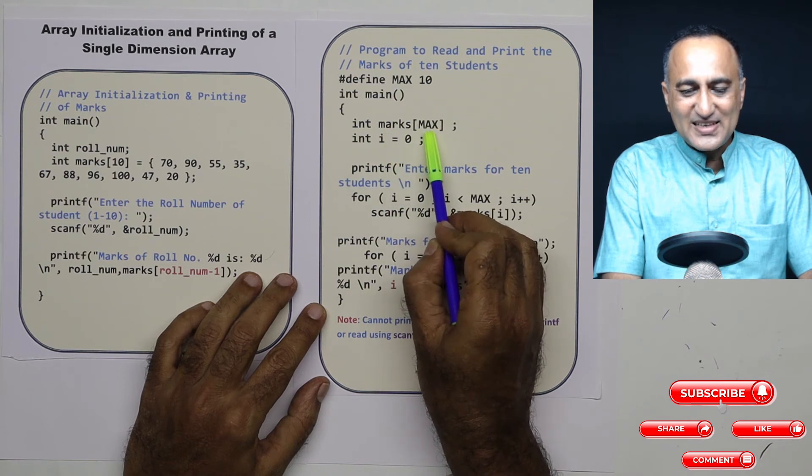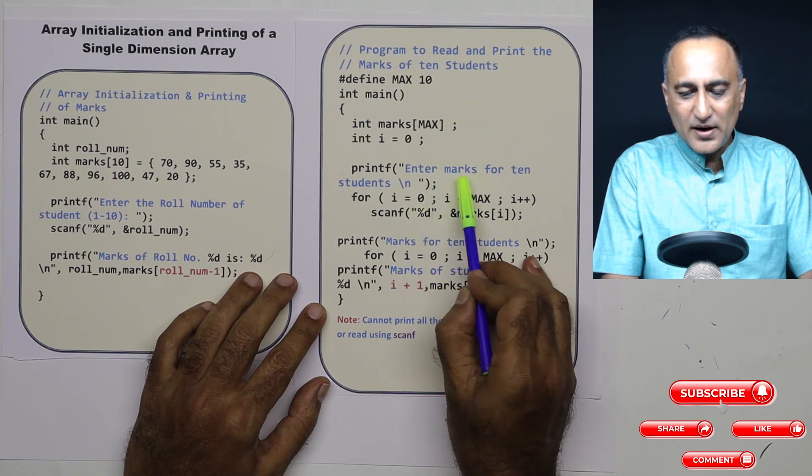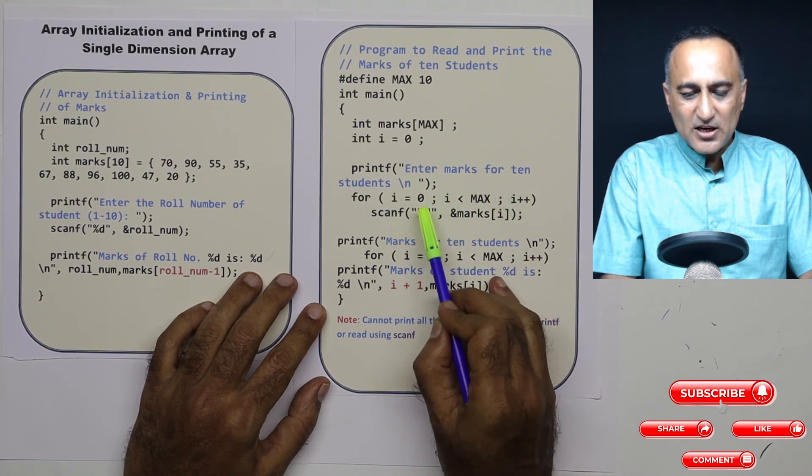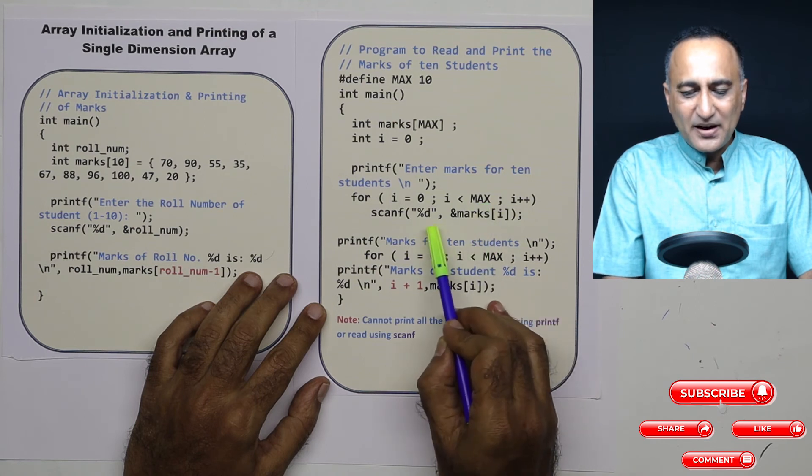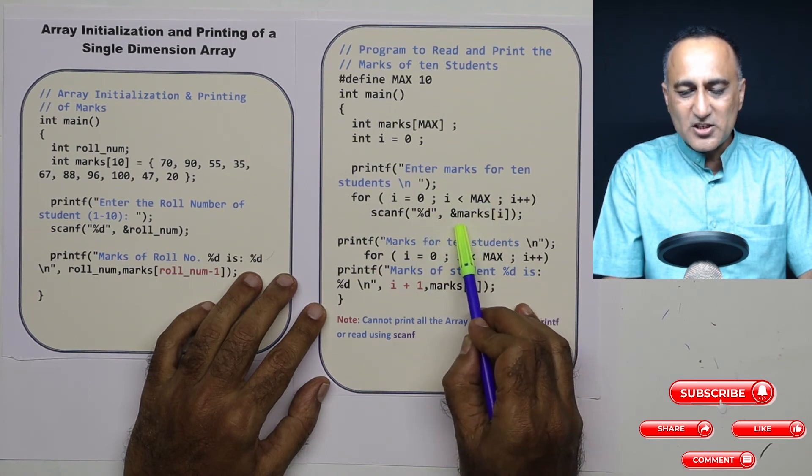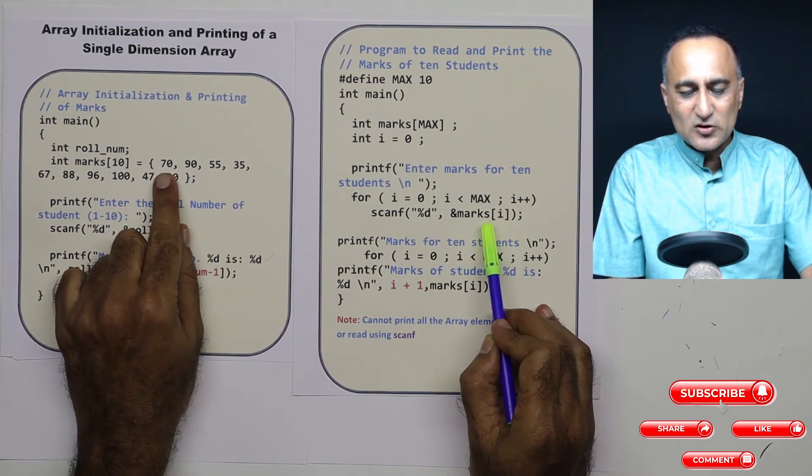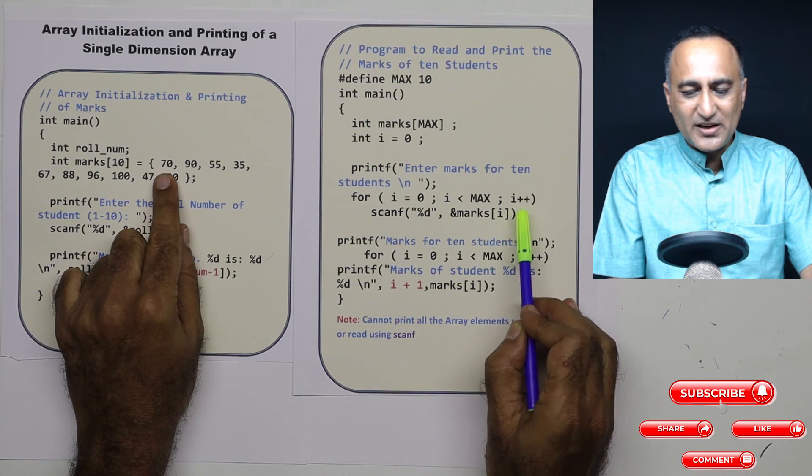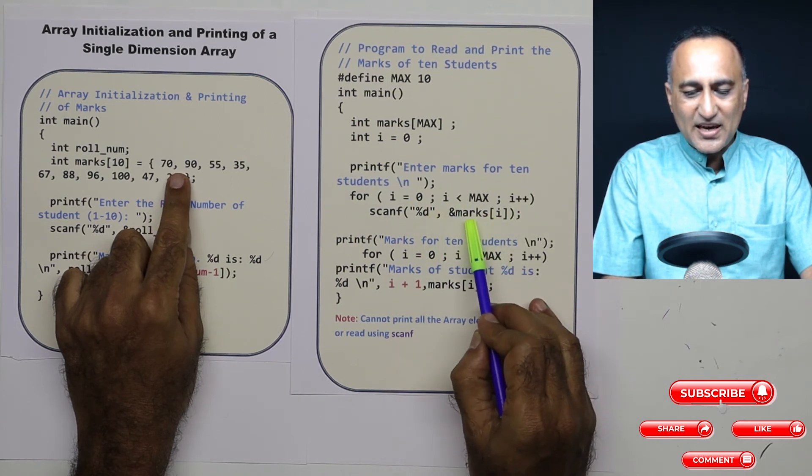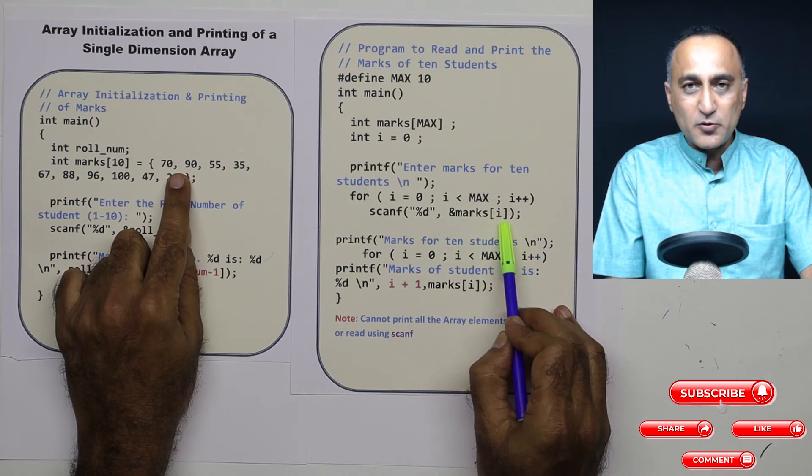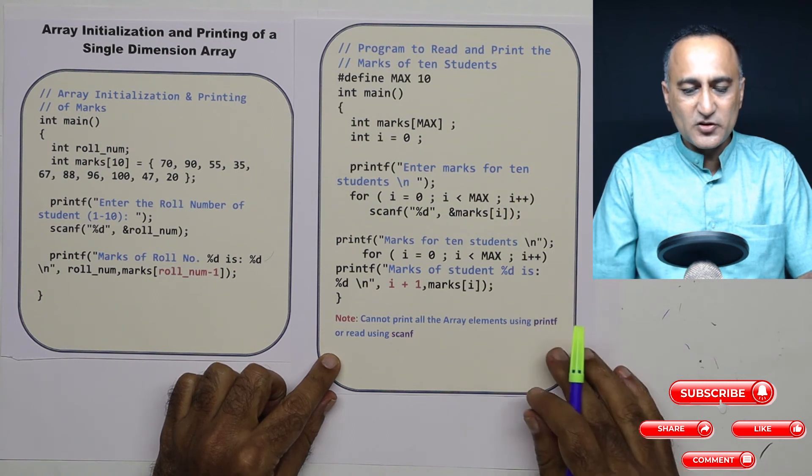So MAX is 10. Marks size is 10. The subscript starts from 0. I am asking the user to enter marks for 10 students. For i equals 0, i less than MAX, I am reading starting from the 0th location address of marks[i]. So let's say I enter 70. So marks of 0 is going to be 70. i becomes 1. When i becomes 1, next time scanf is going to be marks of 1st position, which is going to be 90. So this way I am going to read the marks for all the 10 students.